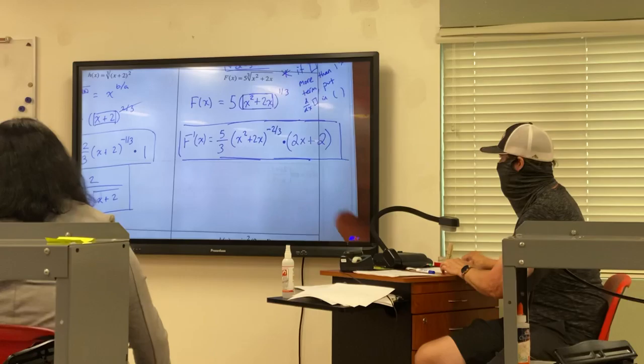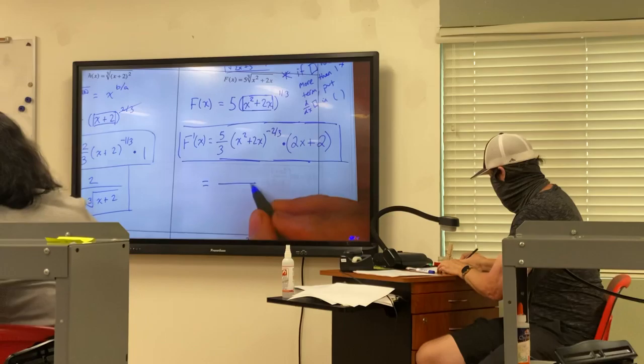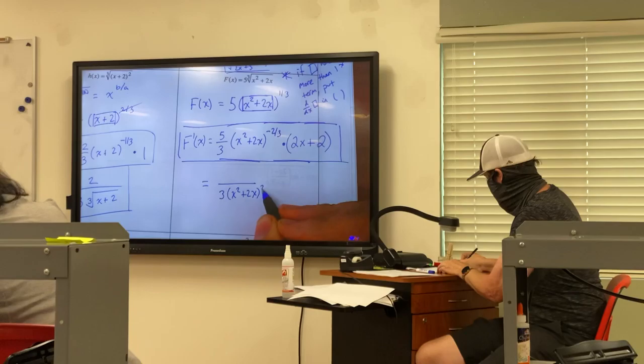Could we practice rewriting it a little bit better? Sure. What would I do with the negative two thirds part? Bring it down, so the denominator would be 3 parentheses x squared plus 2x to the positive two thirds.